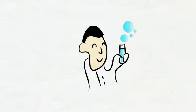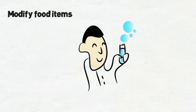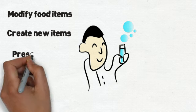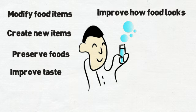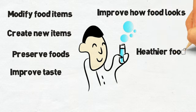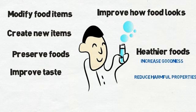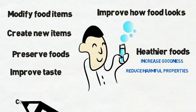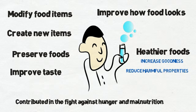Our food today has a close relationship with science. Science is used to modify food items and even create entirely new ones. Science is used to preserve foods. Science is used to improve the taste of food and how it looks to our eyes. Science is also used to create healthier foods by either increasing its useful properties or reducing its harmful ones. Food scientists have also contributed in the fight against hunger and malnutrition by developing affordable and nutritious foods.